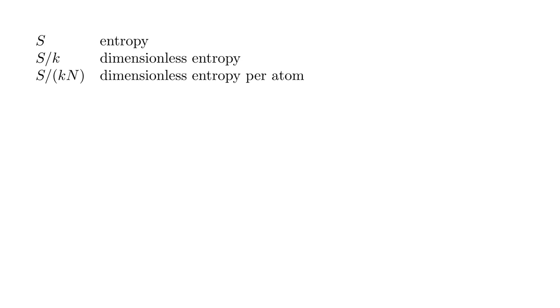We will use the following terminology: S denotes entropy with dimensions of joules per kelvin. S divided by K is dimensionless and we call this the dimensionless entropy. And S over K-N, with N the number of atoms, we call the dimensionless entropy per atom.